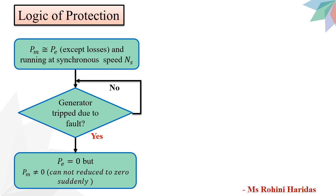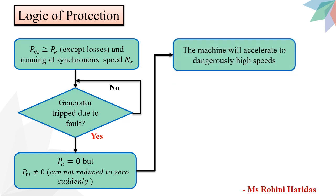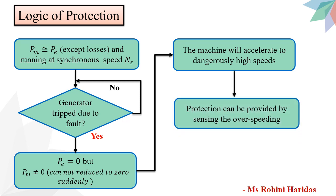However, the mechanical power input PM cannot be suddenly reduced to 0. Therefore, we land up in a situation where the generator has full input mechanical power but no output electrical power. This would cause the machine to accelerate to dangerously high speed if the mechanical input is not quickly reduced by the speed governing mechanism. Protection against such a condition can be provided by sensing the overspeeding and taking steps such as operating the steam valve so as to stop the input to the turbine.